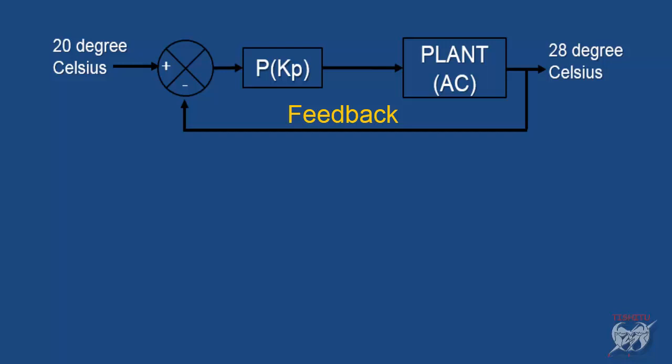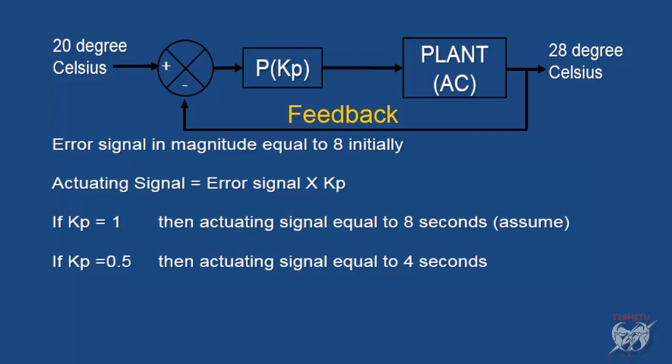Firstly we discuss proportional controller. Basically it helps to achieve desired output fast. Let me explain. Initially we get magnitude of error signal 8. In this case it multiply by proportional constant controller Kp to generate actuating signal.